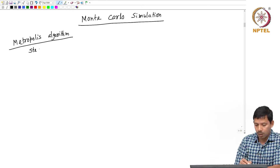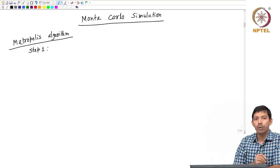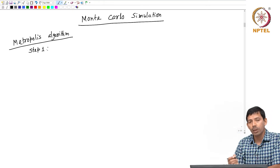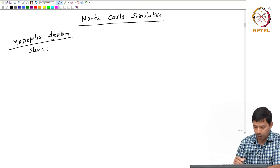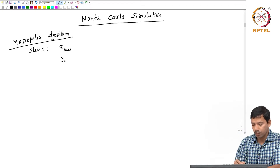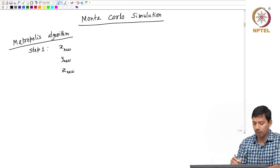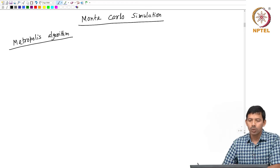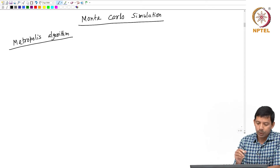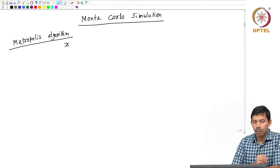In the Metropolis algorithm, there are three important steps. In step one, I will generate a new set of coordinates of my system randomly using a random number generator. So x_new, y_new, and z_new are the new coordinates of the ith particle. I will obtain x_new, y_new, z_new from my old conformation. In the Metropolis algorithm, we are generating the new coordinates of the ith particle using the random number generator.